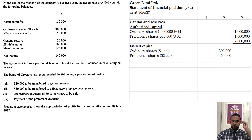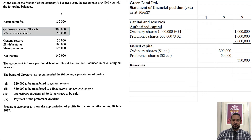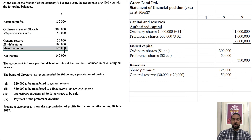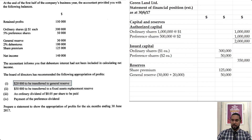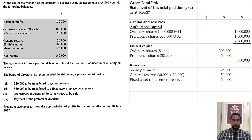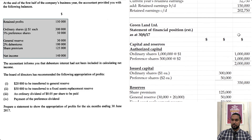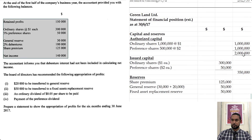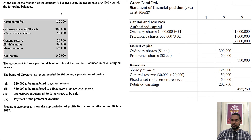So we have $300,000 worth of ordinary shares and $50,000 worth of preference shares at par value, giving us $350,000. Then the reserves: share premium of $125,000. The general reserve: we had $30,000 previously plus the $20,000 transferred via the appropriation account above. The fixed asset replacement reserve is $50,000 — that was a brand new reserve with no pre-existing balance. And retained earnings of $202,750. That gives us total available reserves of $427,750 and total share capital and reserves of $777,750.